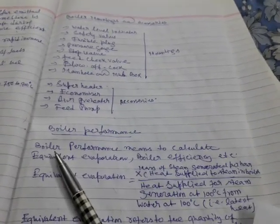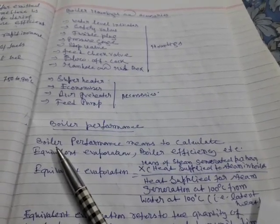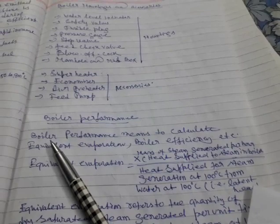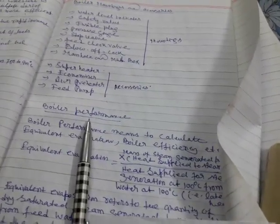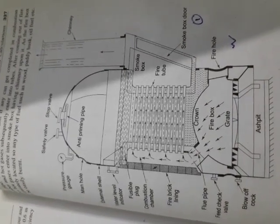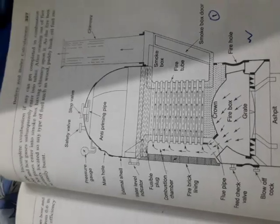An important topic in your syllabus is the Cochran boiler. This is the actual diagram of the Cochran boiler — you should draw it in your workbook. The diagram shows the grate, firebox column, and the Cochran boiler structure. The next boiler in your syllabus is the Babcock and Wilcox boiler.